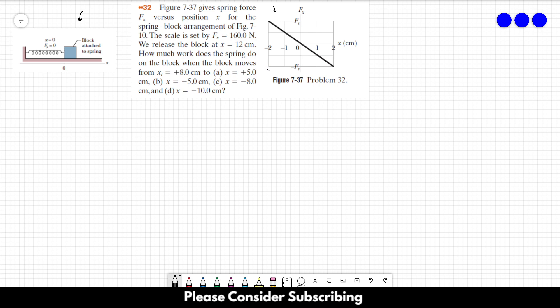We release the block at x equals to 12 centimeters. How much work does the spring do on the block when the block moves from the initial position, 8 centimeters, to letter A, 5 centimeters, letter B, minus 5 centimeters, letter C, minus 8 centimeters, and letter D, minus 10 centimeters.